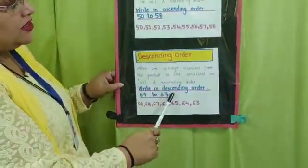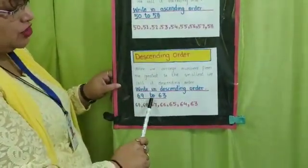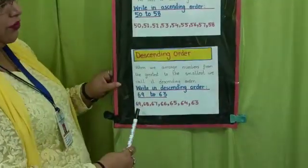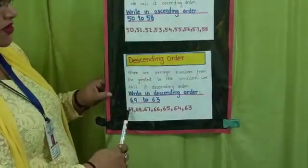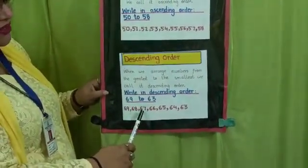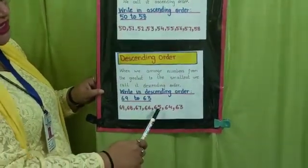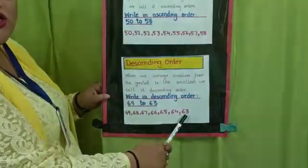Write in descending order 69 to 63. The biggest number we start with 69, 68, 67, 66, 65, 64, 63.